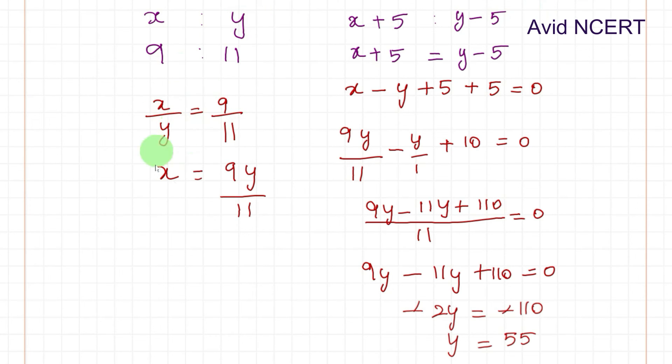Now substituting this y in the place of this equation which is x equals 9 times y is 55 divided by 11. So 11 times 5 is 55, 9 times 5 is 45. So we know the values of x and y which is x is 45 and y is 55.